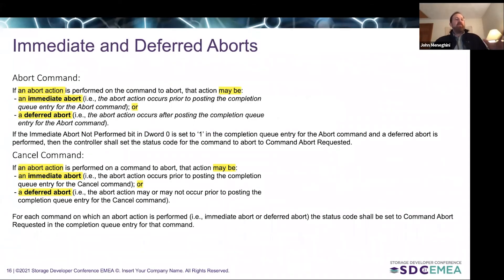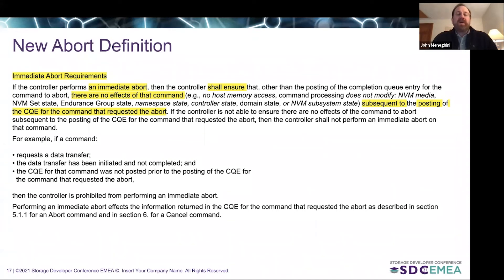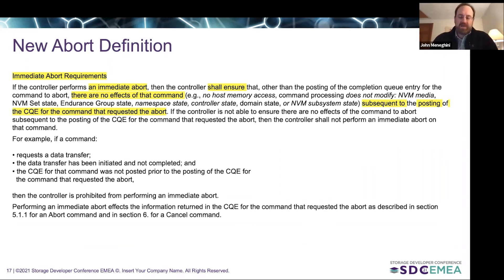Here are some highlights from the spec. We have both for the abort command and the cancel command immediate and deferred abort operations. Here's the new definition for the immediate abort requirement — this is the definition that allowed us to remove the language requiring ordering between the completion queue of the abort command and the aborted command. It basically implements an IO barrier type of mechanism, so that as long as the controller can guarantee that the aborted command will have no further effects on host memory or on the media, the abort command is free to return its abort status.